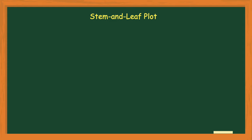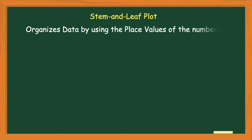Stem and leaf plots are just a graph that organizes data by using the place values of the numbers, and data is just information that you have collected. The numbers I'm going to start with to show you what a stem and leaf plot is are: 10, 11, 14, 31, and 33.